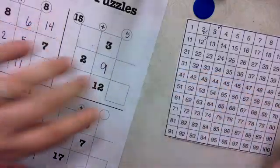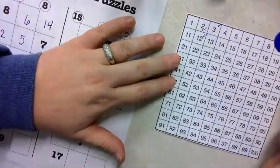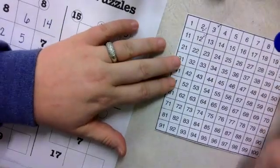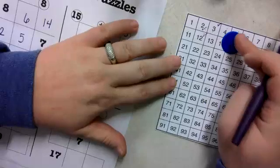Here, 9 plus something is 15, so I would start on the 9, and I would scoot until I got to the 15, so I'm at 9. So, I would move 1, 2, 3, 4, 5, 6.